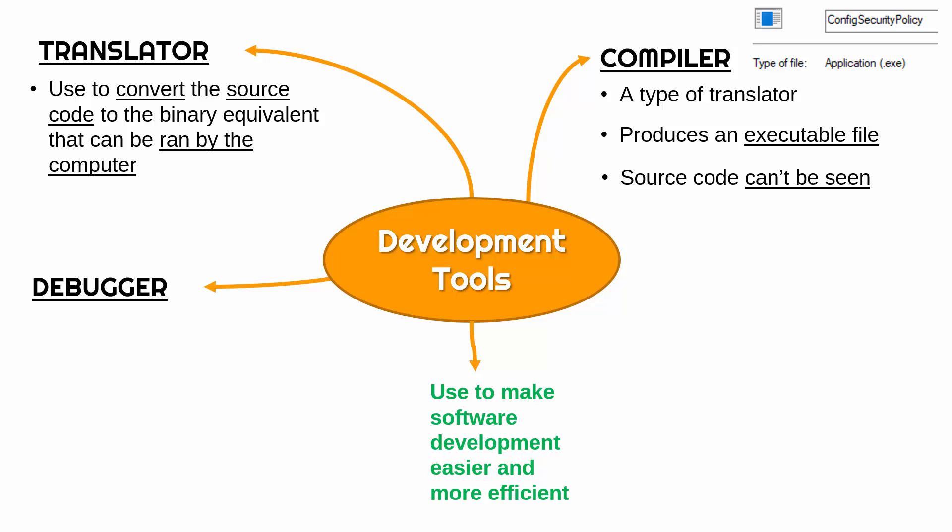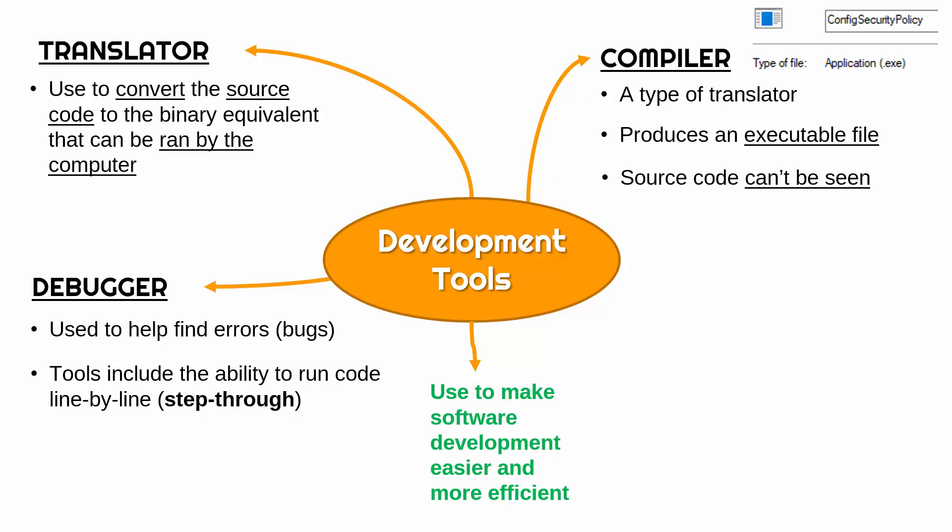Writing code can be tricky — you can encounter lots of errors, and things don't often work first try. A debugger is a tool, either separate or built into another tool, used to help find these errors, also called bugs. You might be able to run code line by line. If you run a program normally it will just carry on, possibly crashing if it hits a problem. But a step-through tool lets you run it really slowly so that as soon as an issue happens, you can find where it was and hopefully fix it.